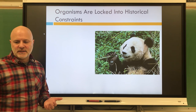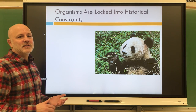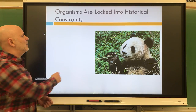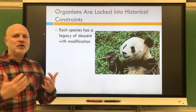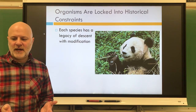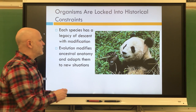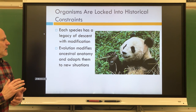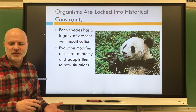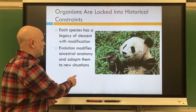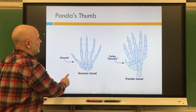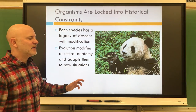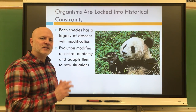Next, organisms are locked into historical constraints. Each organism has a legacy of descent with modification — they don't start from scratch. Evolution is going to modify ancestral anatomy and adapt it to new situations. An example here is this panda and what is known as a panda's thumb.